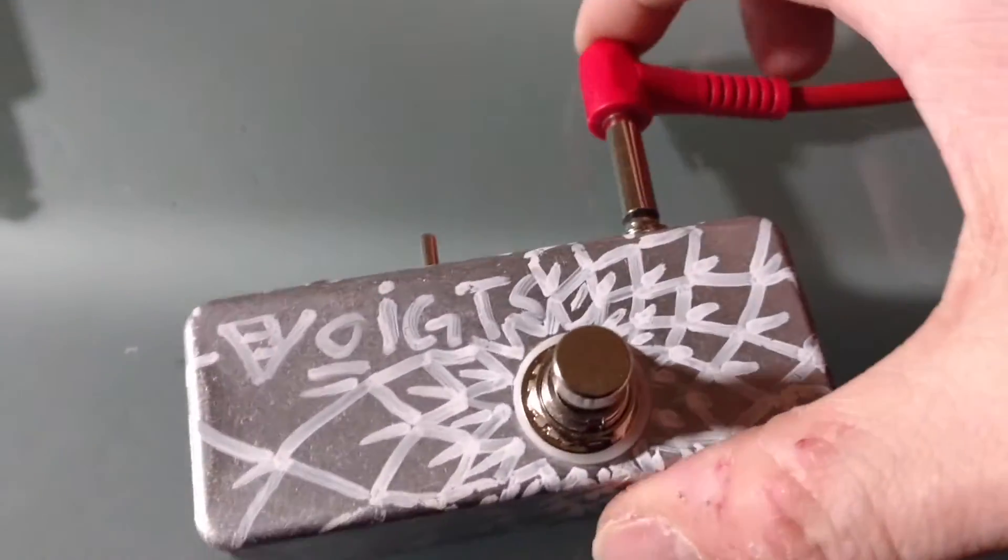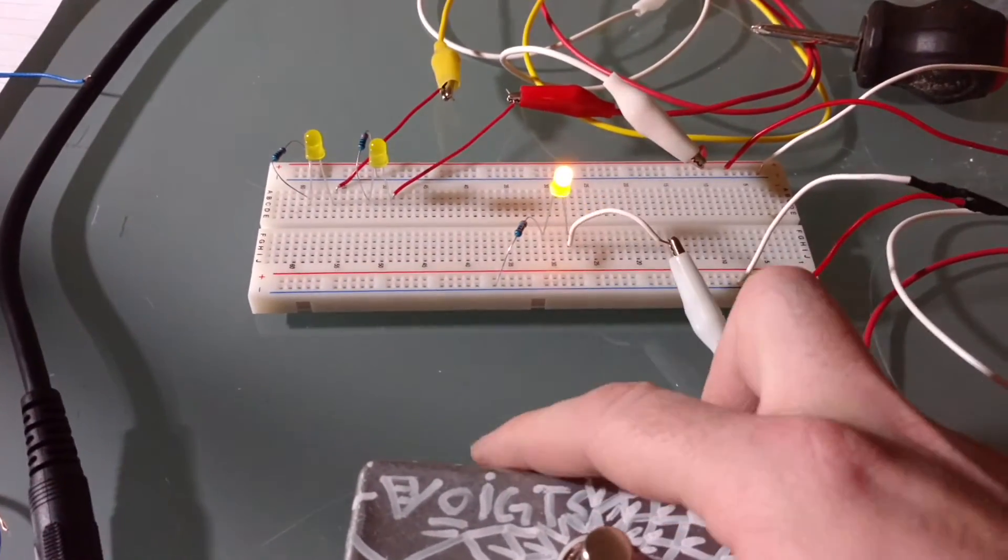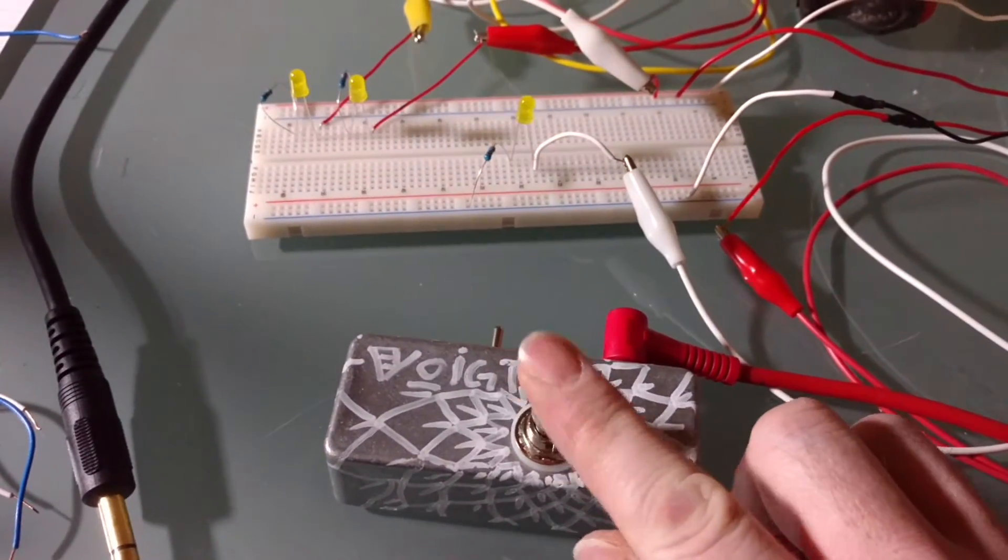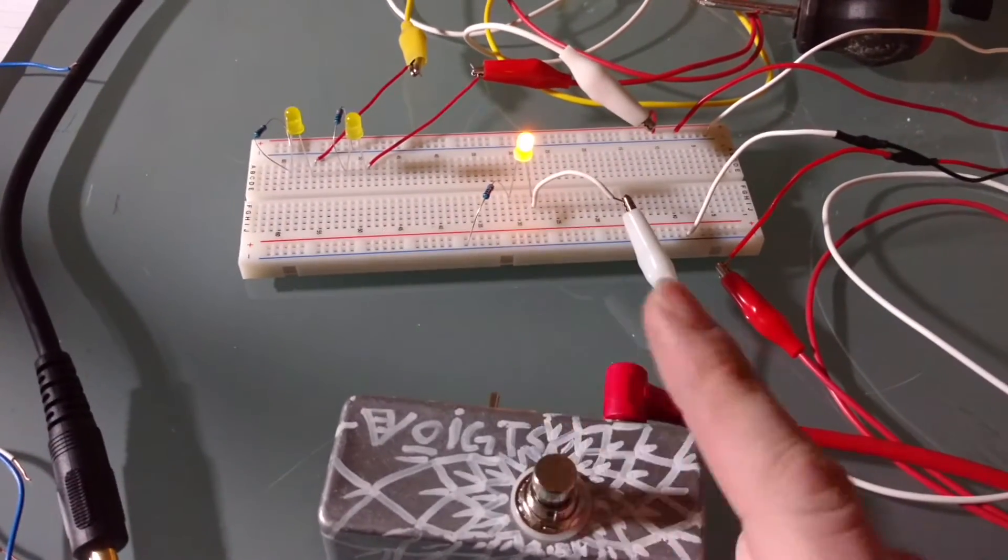This is the mono side. I don't know if you can see the LED. This is normally open. This is normally closed. Or normally open.